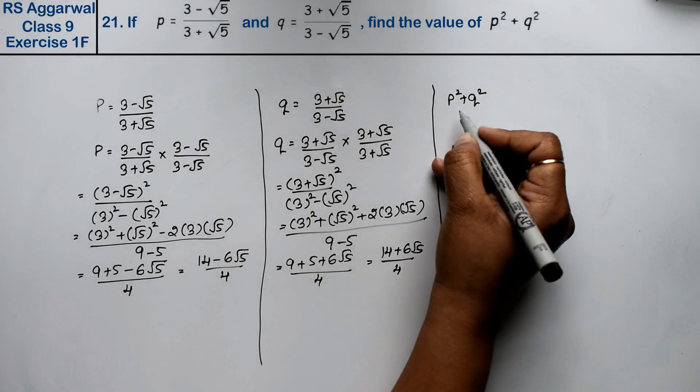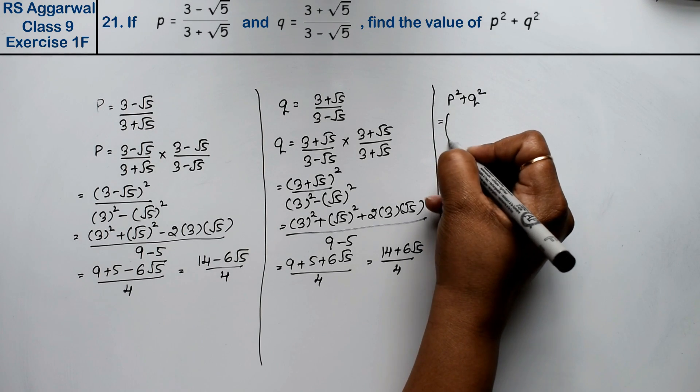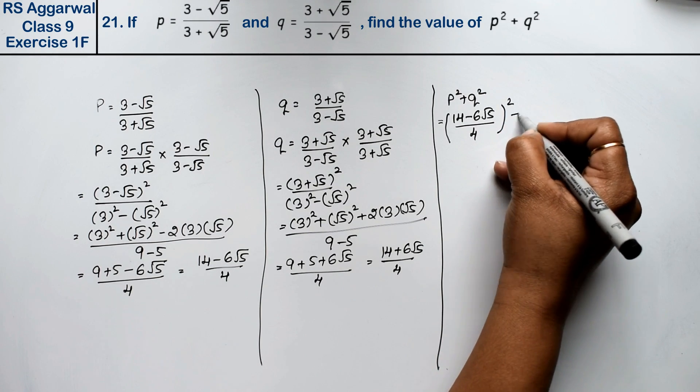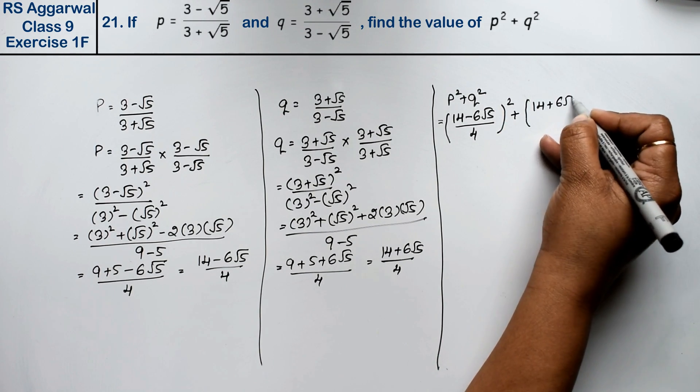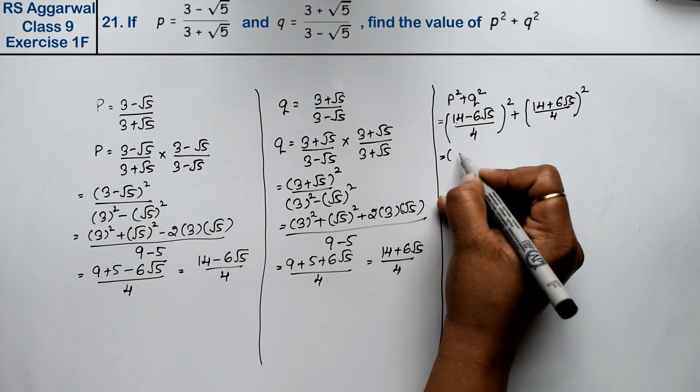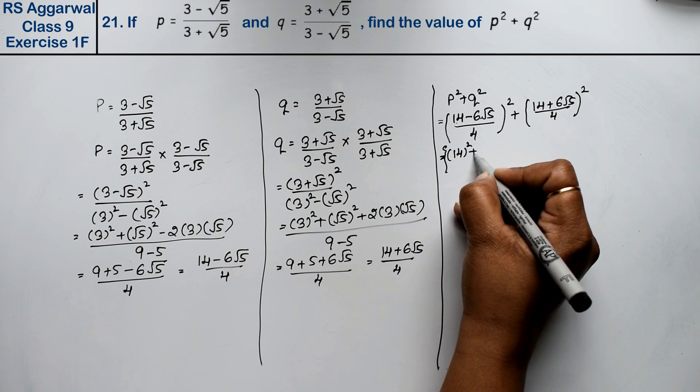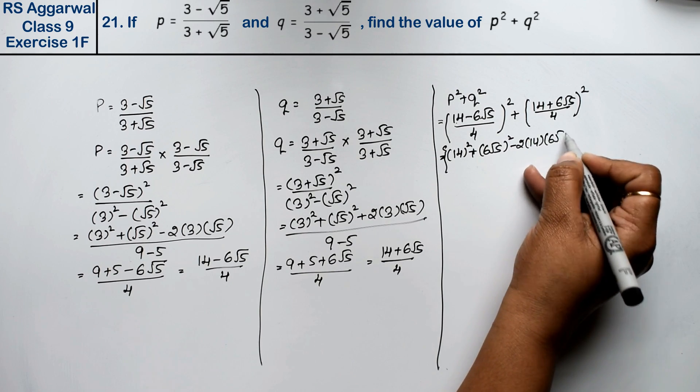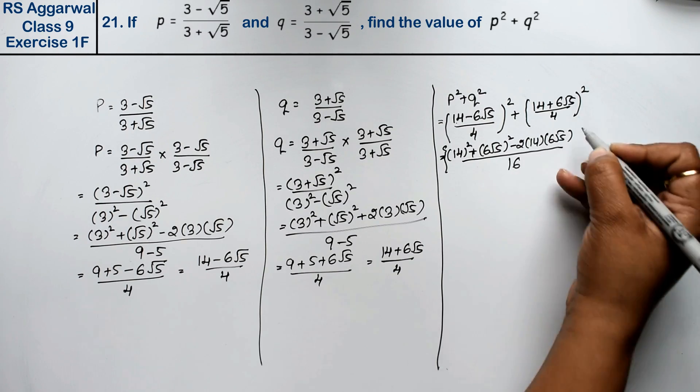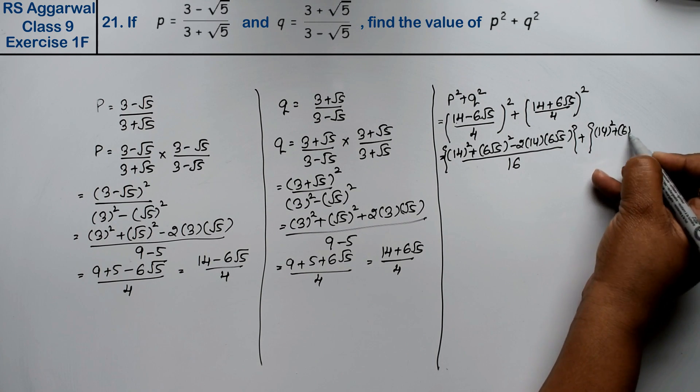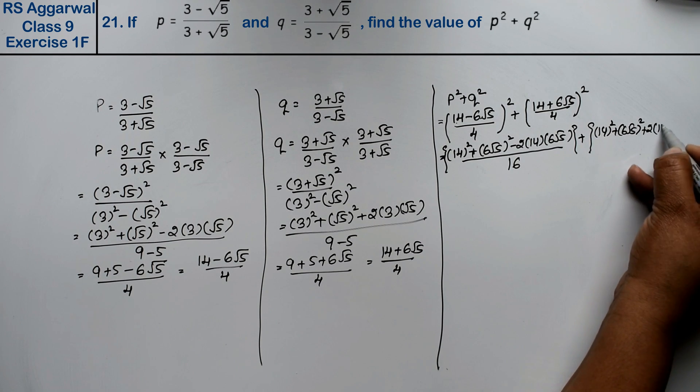Now we will find p square plus q square. Our value of p was 14 minus 6 root 5 upon 4 whole square, plus 14 plus 6 root 5 upon 4 whole square. Now see, here we use the formula a minus b whole square. That means 14 square plus b square minus 2ab upon 4 whole square.